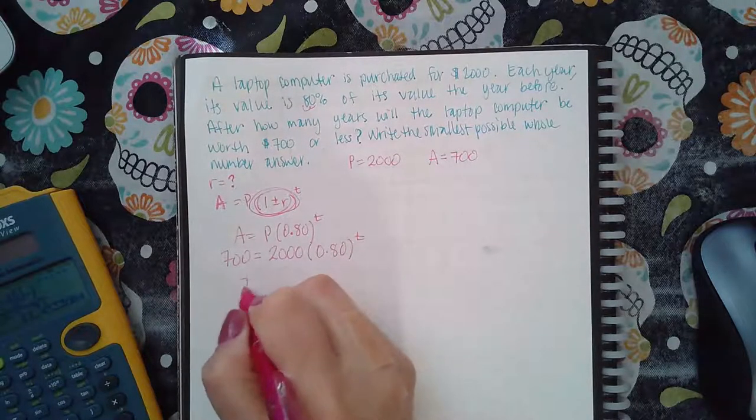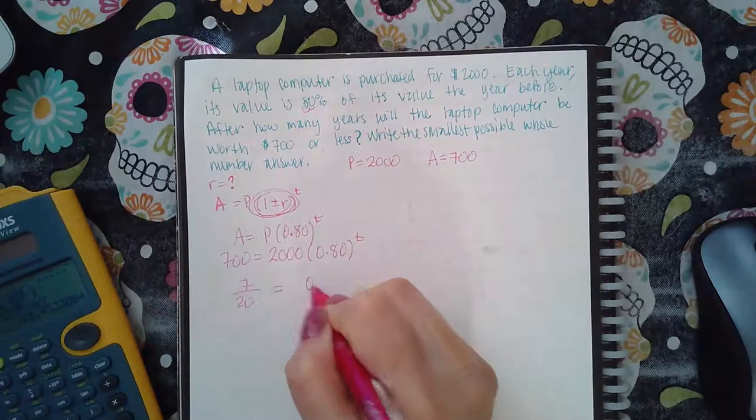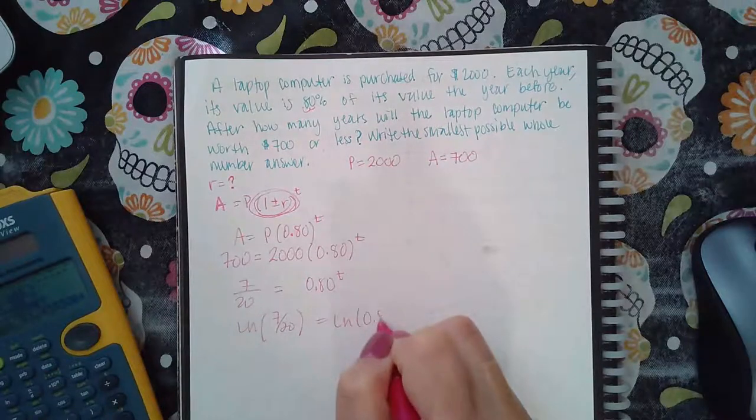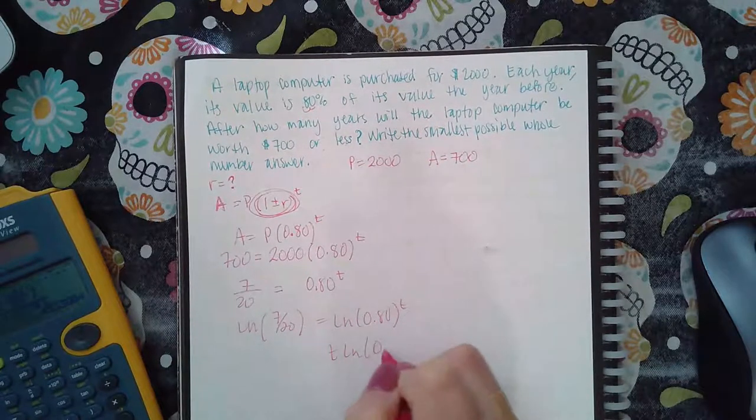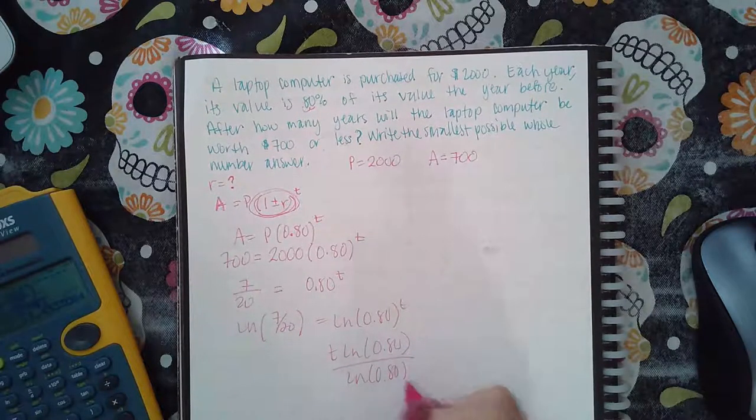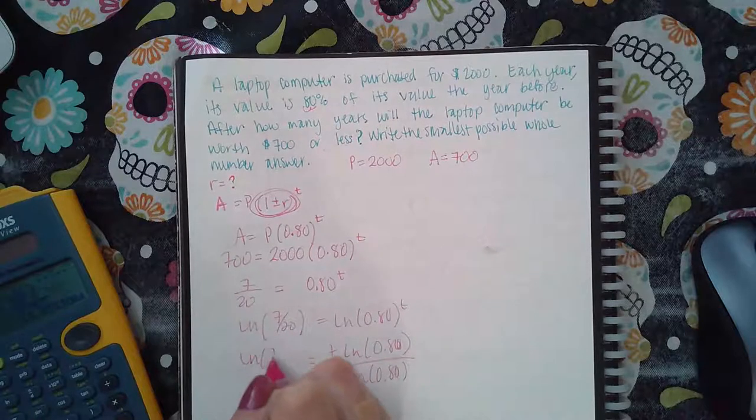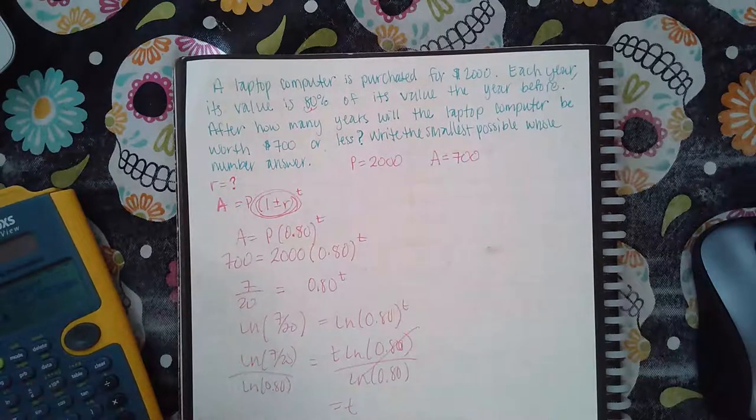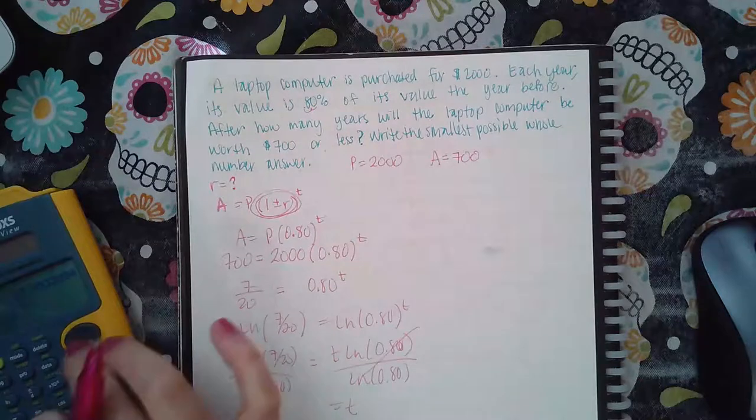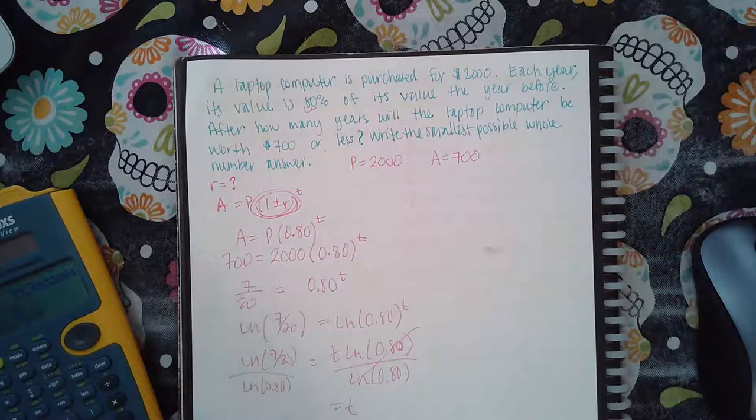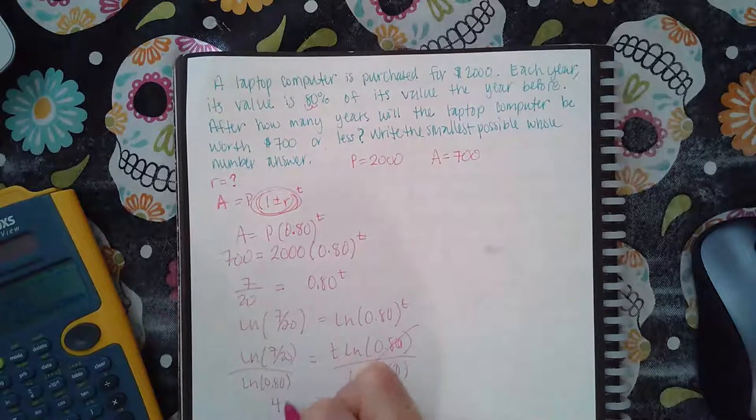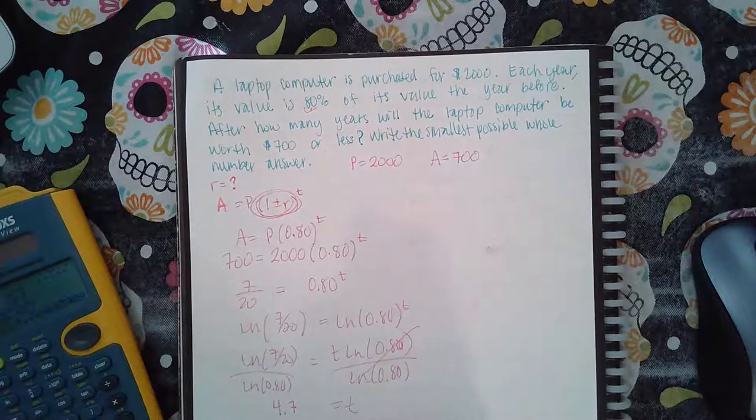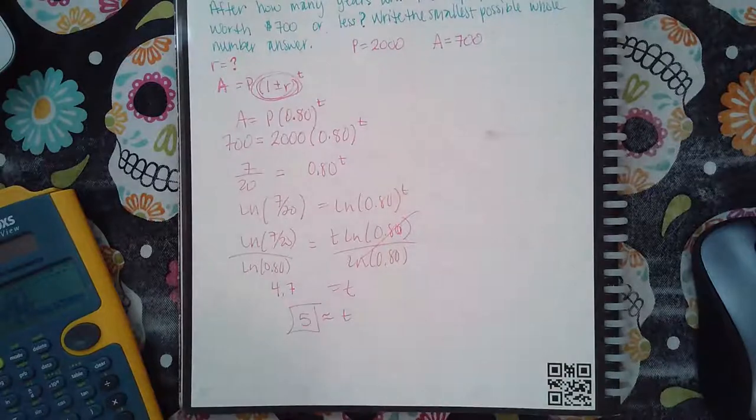So I'm going to divide by that. I'm going to get 7 over 20 equal to 0.80 to the power of T. Do the ln on both sides. Take the T down. Divide both sides by ln of 0.80. So you get T equals ln of 7 over 20 over ln of 0.80. And we get 4.7. And this one says round to the smallest possible. So it is going to round up to 5. And that is the solution there.